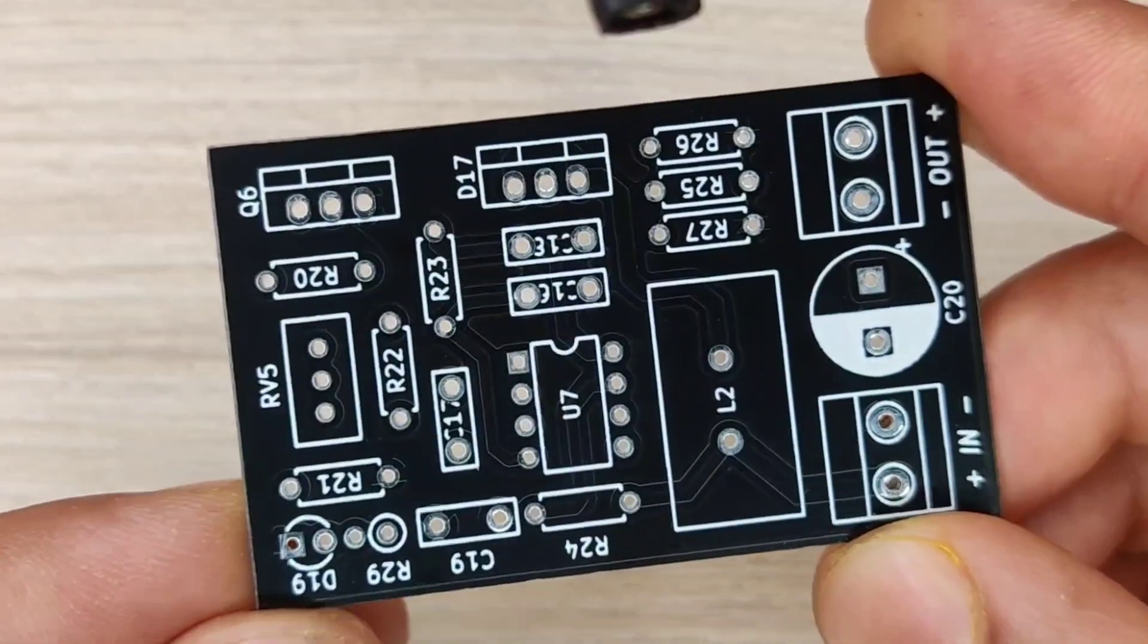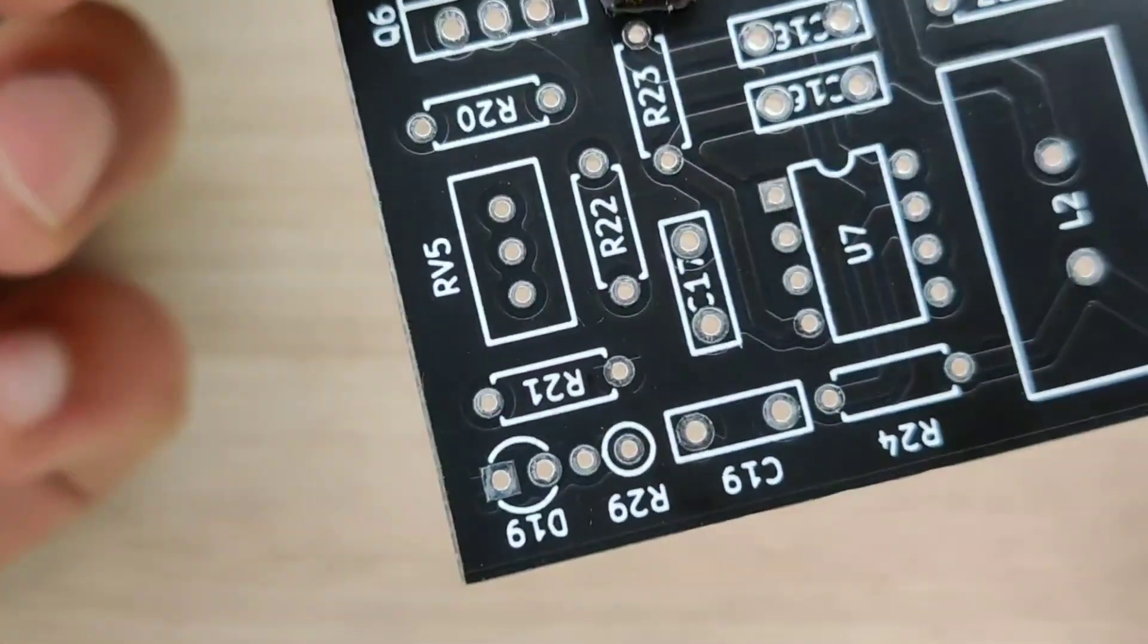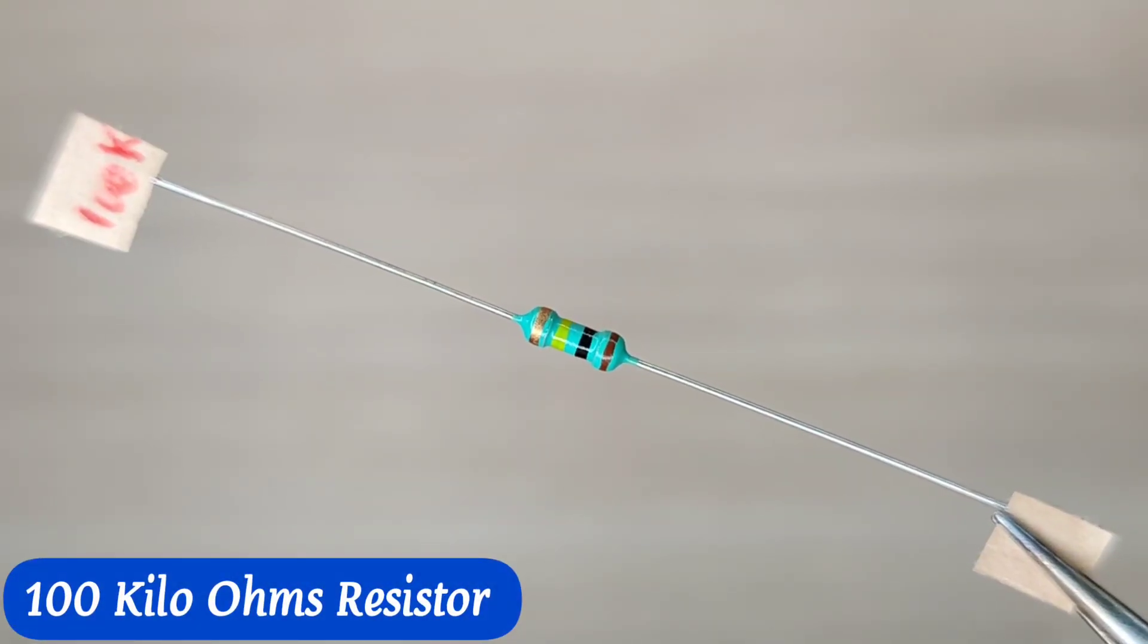And now it is time to assemble the PCB. So let's place all the components on the PCB according to the circuit diagram.